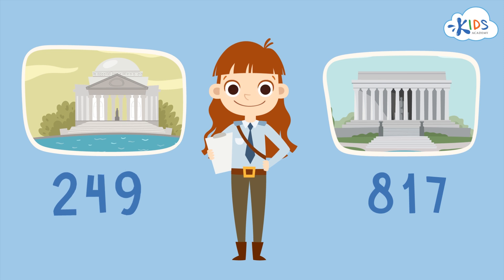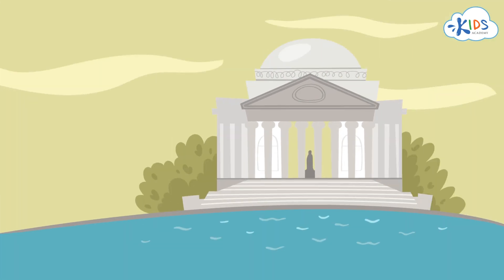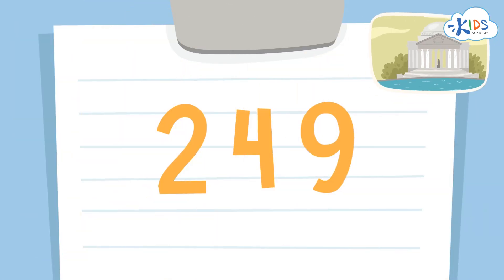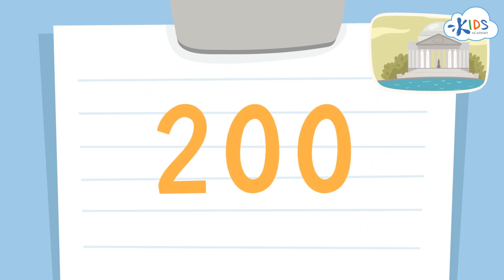Okay, here's the answer. The Jefferson Memorial saw 249 visitors, so we're going to round 249 to the nearest hundred. We'll use the strategy of underlining the hundreds place and drawing an arrow to the tens place so we know what numbers we have to look at. I see a 4 in the tens place — I know if it's a 4 or lower, we have to round down. The 2 in the hundreds place is underlined, so we have to round down 249 to 200. When rounding to the hundreds place, the numbers in the tens and the ones place become zeros.